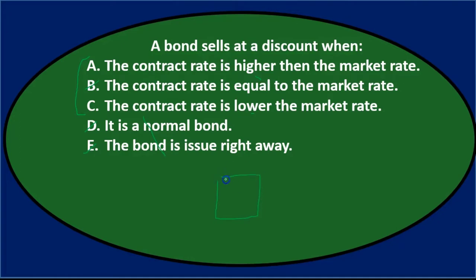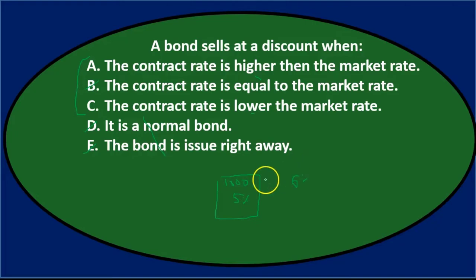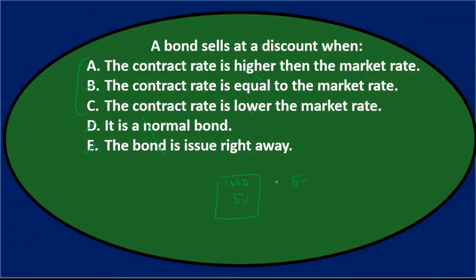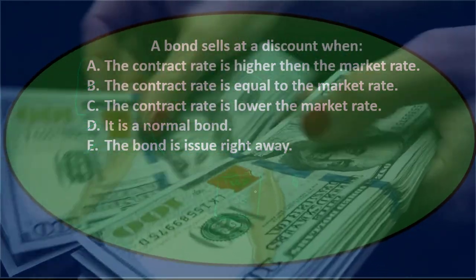To think this through without getting mixed up, consider a concrete example: say we have a 5% bond — we're issuing it and hoping to get $1,000 for it, paying 5% interest. If the market rate is 6%, investors can get $1,000 elsewhere and earn 6%, so they'll go somewhere else. Unless we say, 'We'll accept less than $1,000,' meaning we issue the bond at a discount.